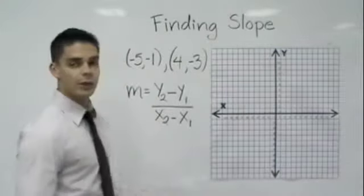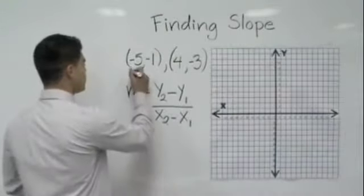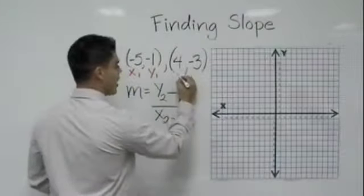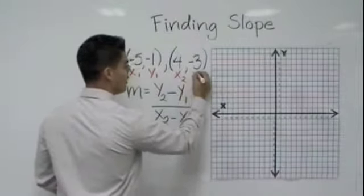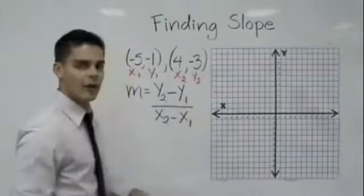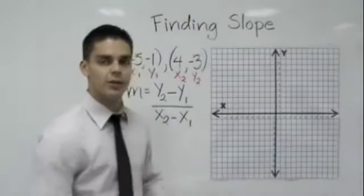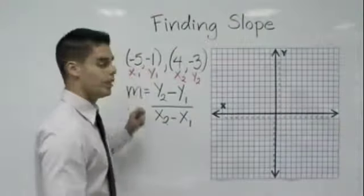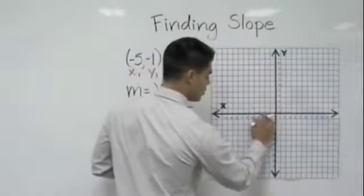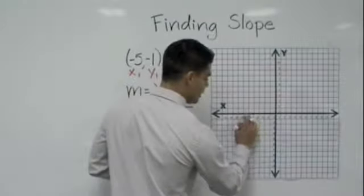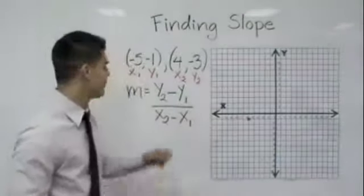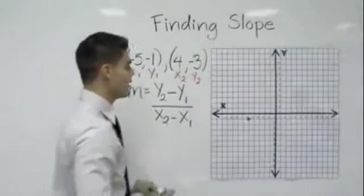Remember we have our two points and we have our x1 and our y1 and then we have our x2 and our y2 and I'm going to go ahead and graph them so at the end we can just check to see if our slope came out correctly. So I have -5 and -1. So 1, 2, 3, 4, 5 and then -1 would be right there. So that's my first point and then I have 4 and -3.